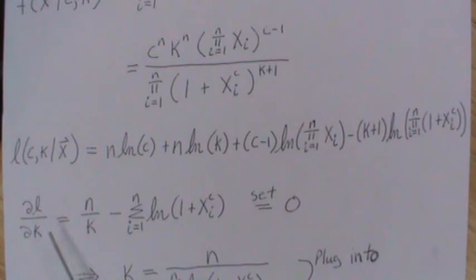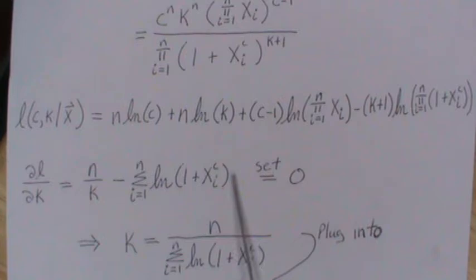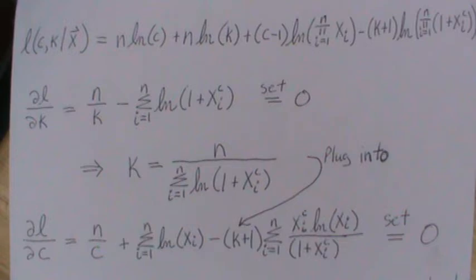Now I'll start taking partial derivatives. The partial derivative of L with respect to K is N over K minus the sum of log(1 plus Xi to the C). We set it equal to 0. Then we add this to the other side and cross multiply to get K. K is equal to N over the sum of log(1 plus Xi to the C). Here instead of the log of a product, I use the sum of the logs, which will be easier to take a derivative of in the next equation. We're going to plug this into that equation.